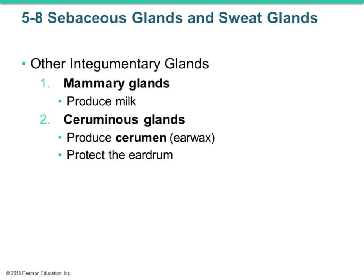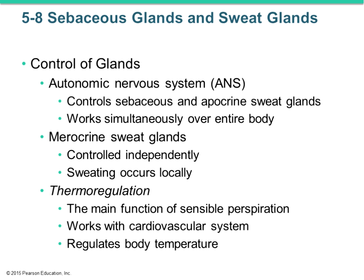Other integumentary glands include mammary glands, which we talked about in the previous chapter, and ceruminous glands, which produce cerumen — earwax — a sticky substance that helps protect the eardrum and slow pathogen movement. Sebaceous and apocrine sweat glands are controlled by the autonomic nervous system, while merocrine sweat glands are controlled independently, with the main function being thermoregulation.